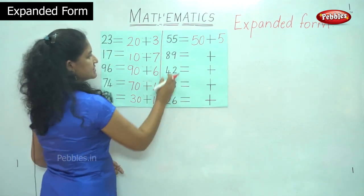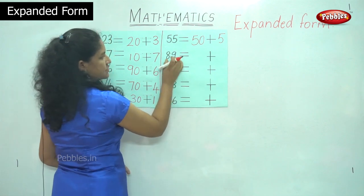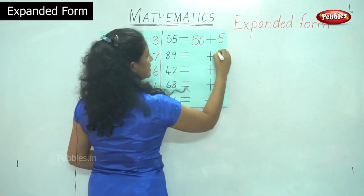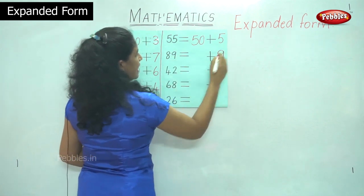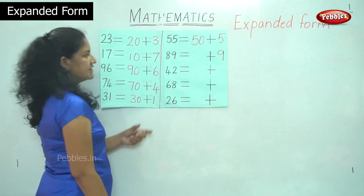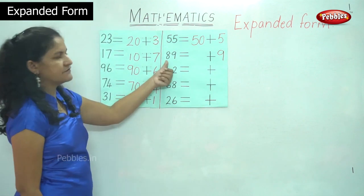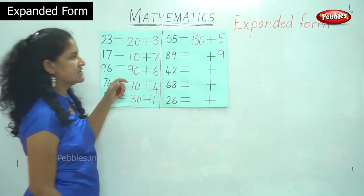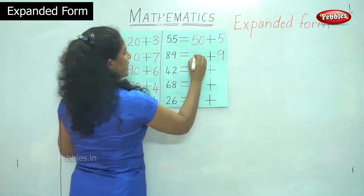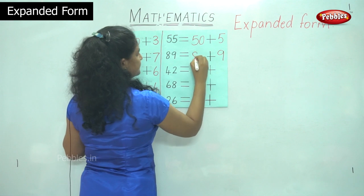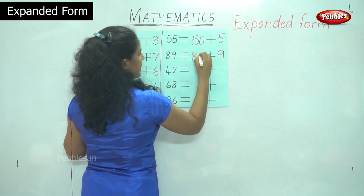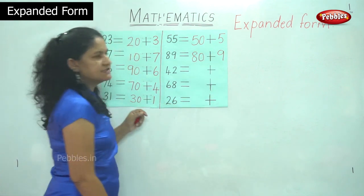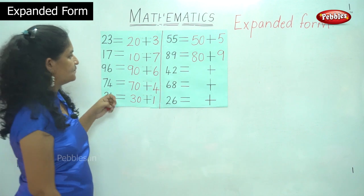The next number is 89. In the ones place I have number 9 and in the tens place I have number 8. 8 tens is 80. So 89 is nothing but 80 plus 9.